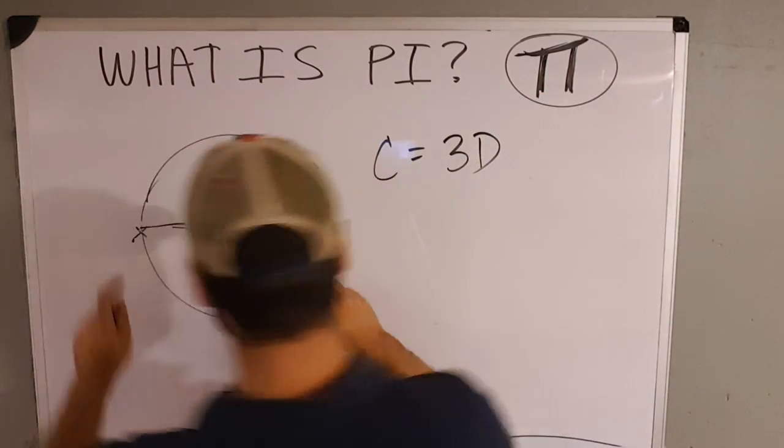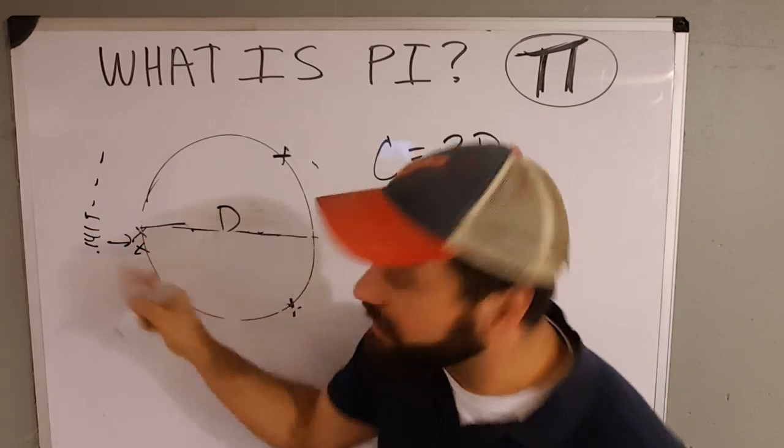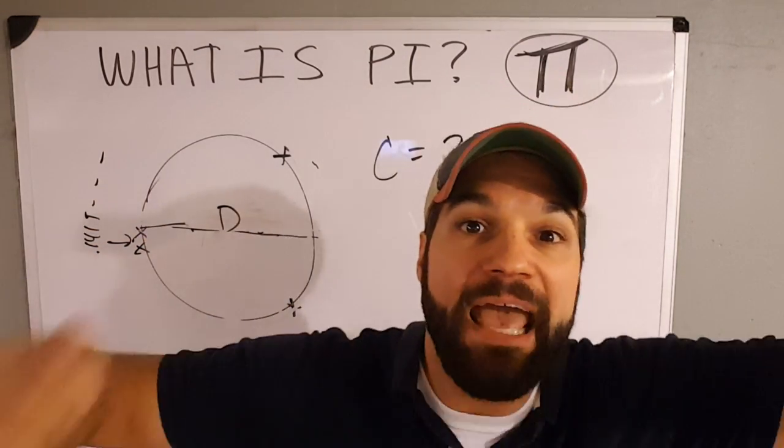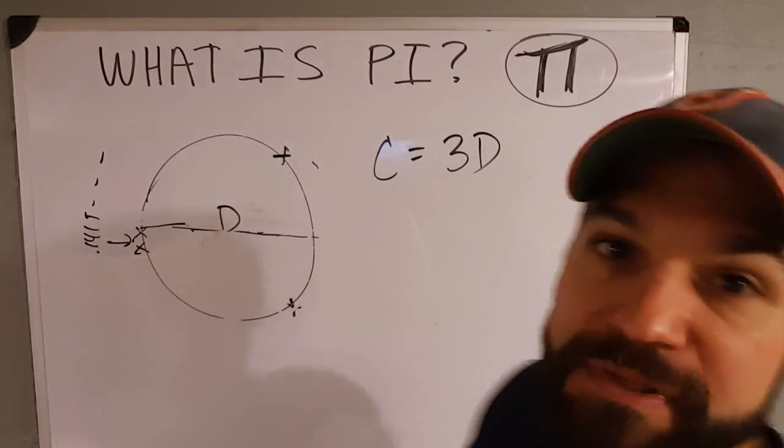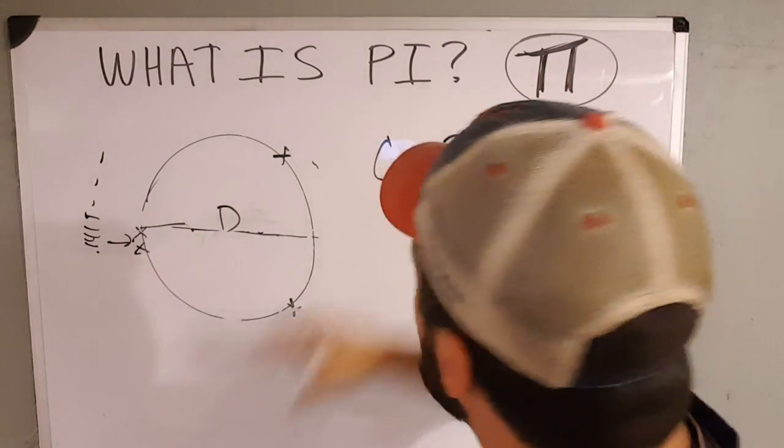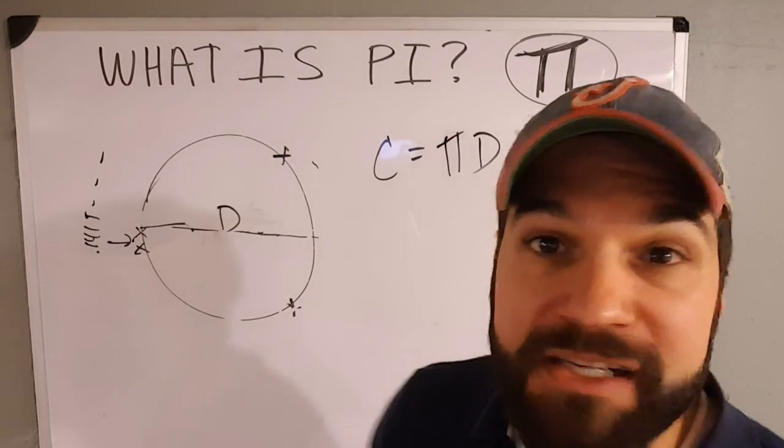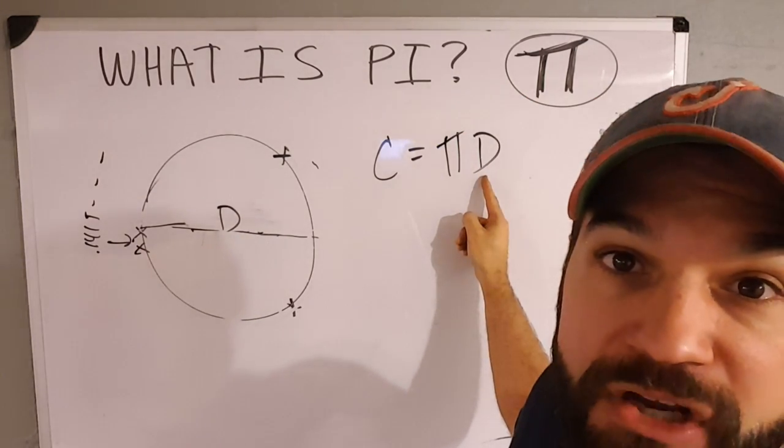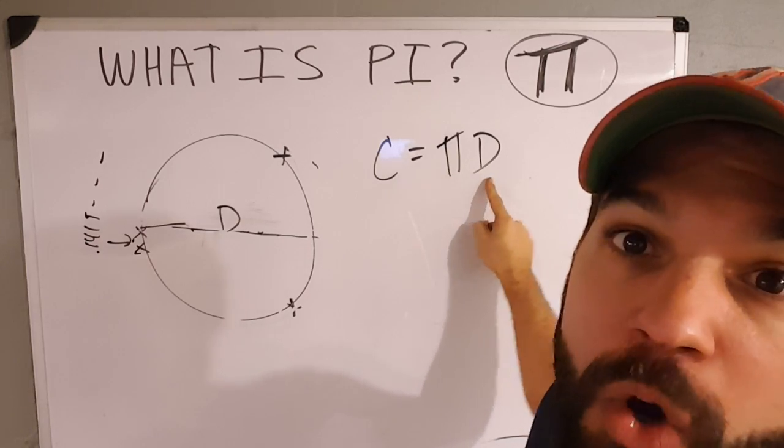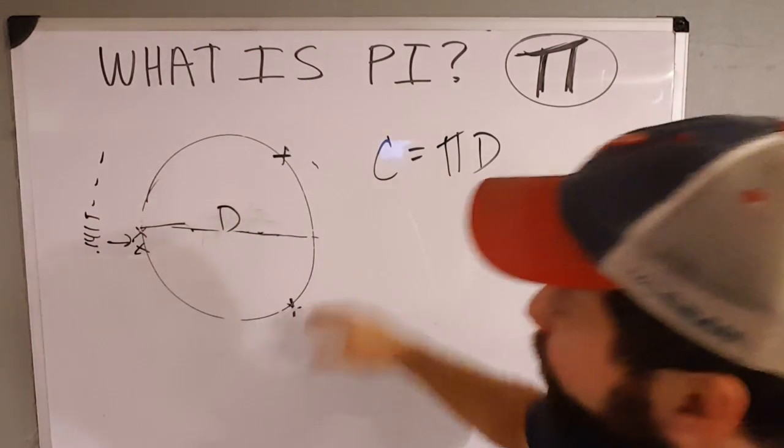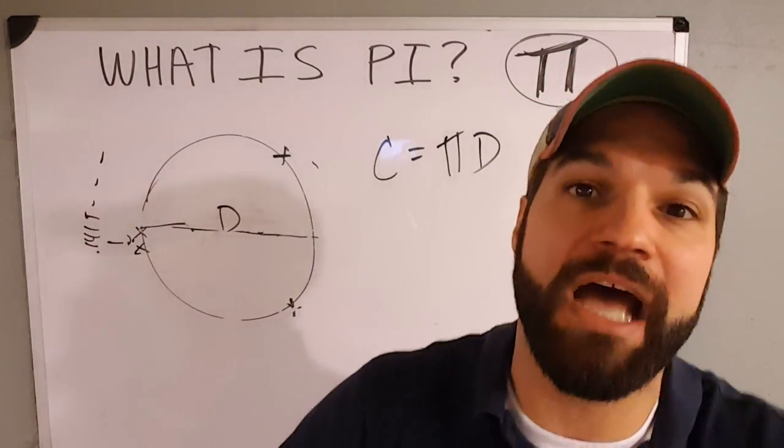Pi is the number of diameters that go around the circle. One, two, three, and a little bit more. 0.1415, da da da. A little bit more of another one. Exactly pi of them. So the circumference isn't three times the diameter. The circumference is pi times the diameter because it's not three of them that go around. The number that go around - pi of them. Pi diameters go around the circumference. Pi is a number. That many of those diameters.